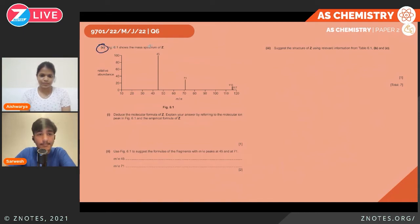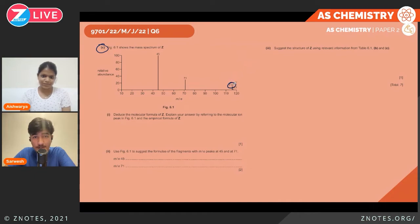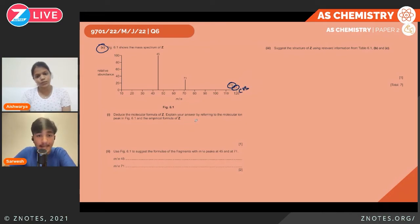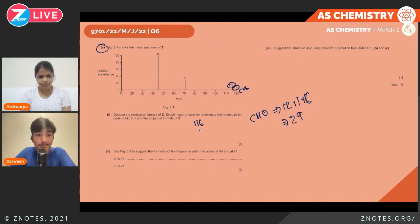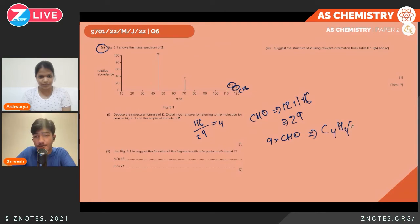Part C involves mass spectrometry. The molecular ion peak is at m/z = 116. The M+1 peak (one mass unit higher) arises from the natural presence of carbon-13. The empirical formula unit CHO has mass 12 + 1 + 16 = 29. Dividing the molecular mass 116 by 29 gives 4, so the molecular formula is C₄H₄O₄.